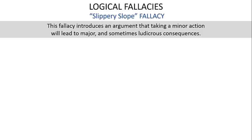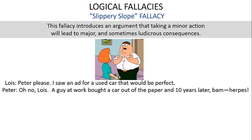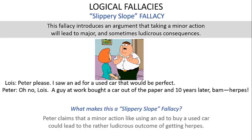The slippery slope fallacy argues that taking a minor action will lead to major or ludicrous consequences. Lois asks Peter to consider buying a car from a newspaper ad. Peter responds: a guy at work bought a car out of the paper, and 10 years later — bam — herpes. Peter claims that buying a used car from an ad could lead to the ludicrous outcome of getting herpes.